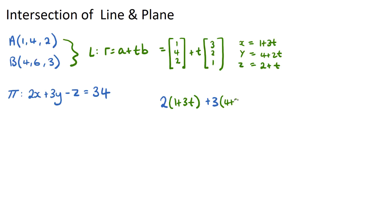We'll have 2(1 + 3t) plus 3(4 + 2t) minus (2 + t) equals 34.